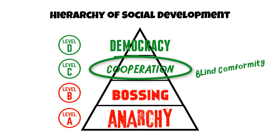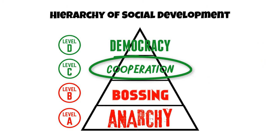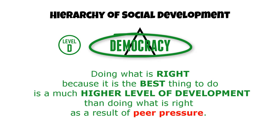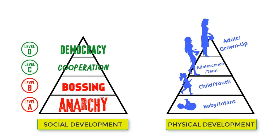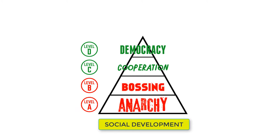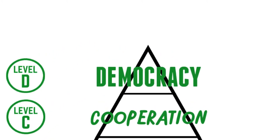Then have a discussion of blind conformity. You would see how this type of cooperation is not necessarily good. Then continue to look at how being considerate of others and cooperating for the right reasons results in a democratic society. Doing what is right because it is the best thing to do is a much higher level of development than doing what is right as a result of peer pressure. Finally, talk about how people have more control over their stages of social development than over their stages of physical development. The thought of being in control over something about themselves always heightens interest in the hierarchy of social development. Can you see the difference between level C — cooperation, conformity — and level D — democracy — taking the initiative to do what is right regardless of peer influence?